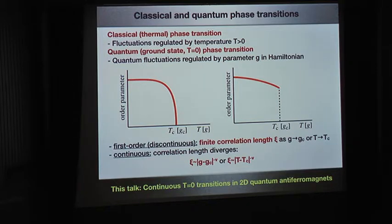At a first-order transition, the correlation length stays finite and there is a jump in the order parameter, whereas in the continuous case the correlation length diverges at the critical point. In this talk, I will focus on continuous transitions in 2D quantum antiferromagnets.